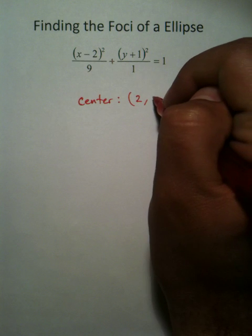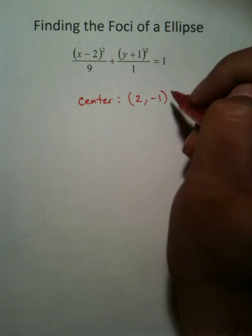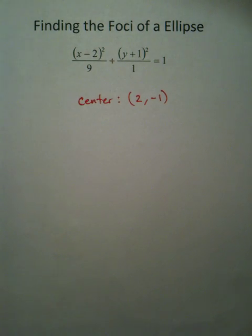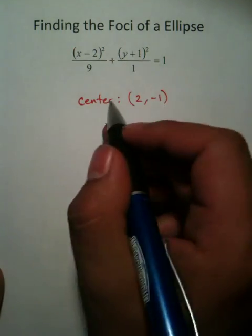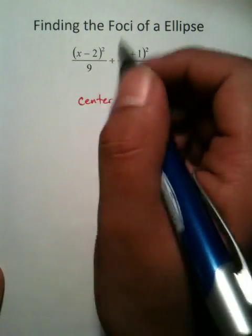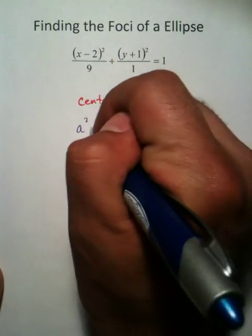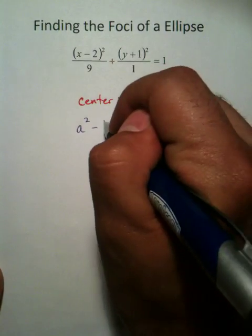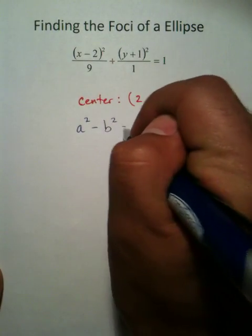The center of this function is 2, negative 1. And the next thing you need is you need a value that's called c. Now, the way you find c is you use this formula right here: a squared minus b squared equals c squared.